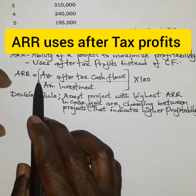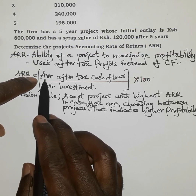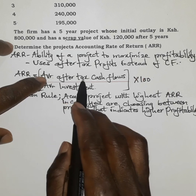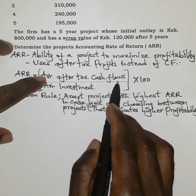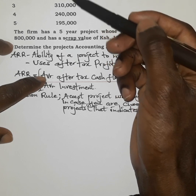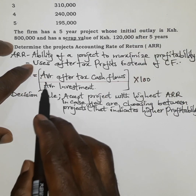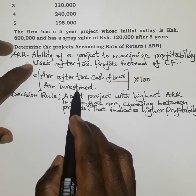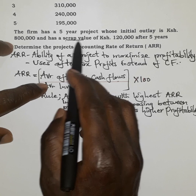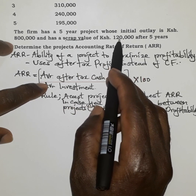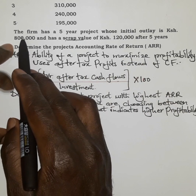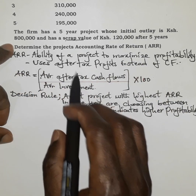The formula for ARR is: average after-tax profits divided by the average investment. The average investment is calculated as the initial outlay plus the salvage value, divided by two.